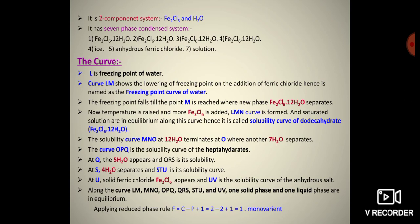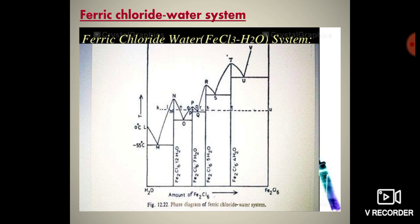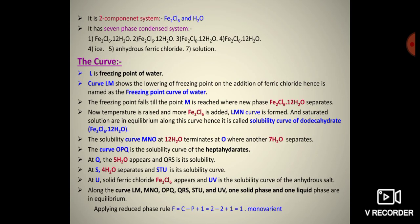The freezing point falls until point M is reached, where the new phase Fe₂Cl₆·12H₂O separates. As temperature is raised and more Fe₂Cl₆ is added, curve LMN is formed, where saturated solutions are in equilibrium. Hence, curve LMN is called the solubility curve of the dodecahydrate, Fe₂Cl₆·12H₂O.